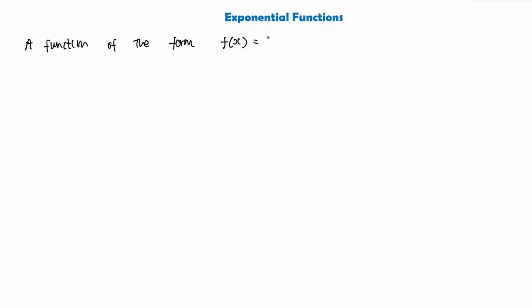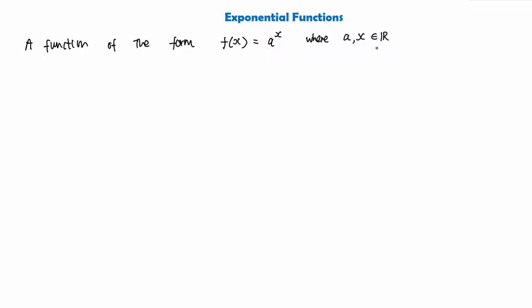Well, what do we mean by this? We say a function of this form is an exponential function, and the form is very important here. The function is simply f(x) = a to the power of x. So this time, instead of x being in the base — for example x minus three, or x squared minus four, or square root of x — x is the power in our function. We have a to the power of x, and both a and x are real numbers.